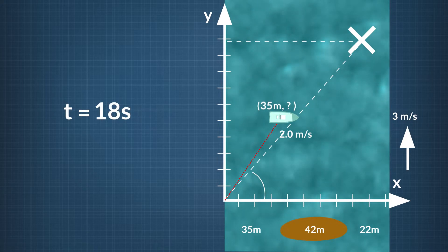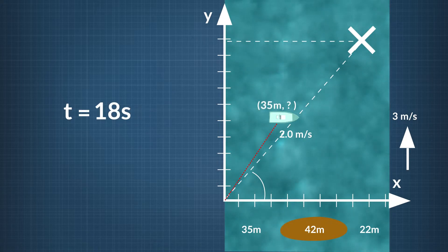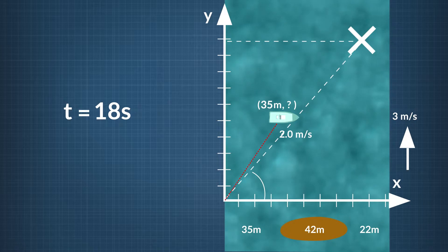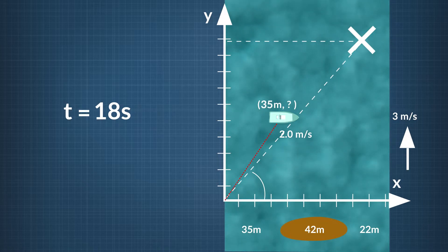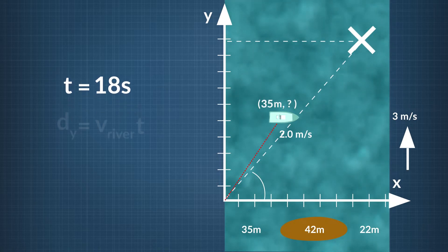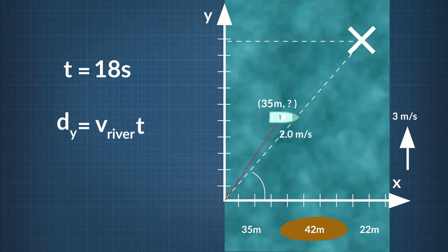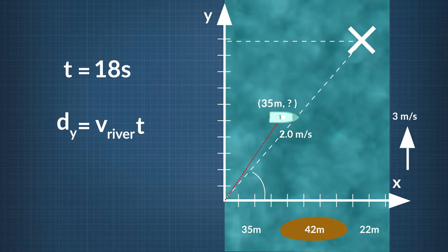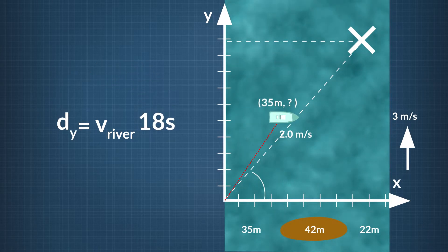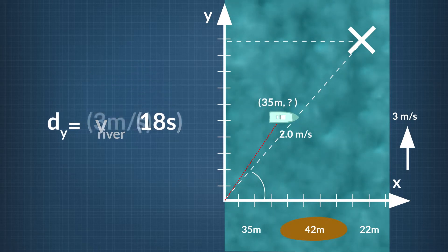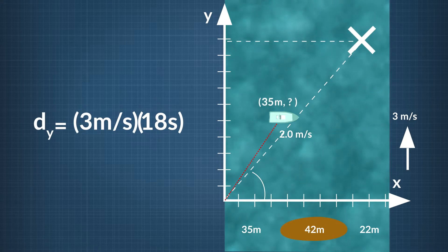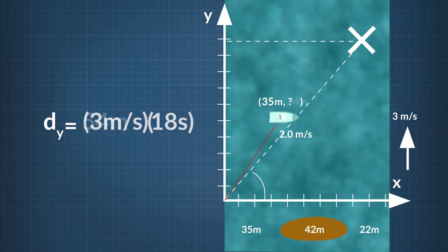In 18 seconds, the river moves the boat downstream in the vertical direction. The river current moves the boat a distance downstream that equals the velocity of the current times the total time, 18 seconds. 3 meters per second times 18 seconds equals 54 meters.